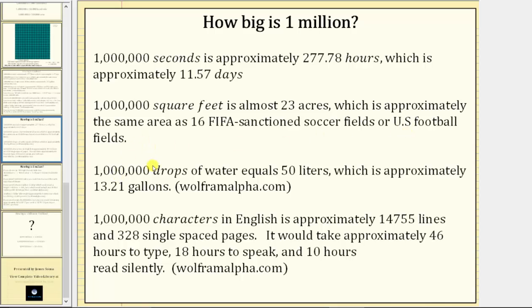One million drops of water equals 50 liters, which is approximately 13.21 gallons. One million characters in English is approximately 14,755 lines and 328 single-spaced pages. This is with an average margin and an average font size.